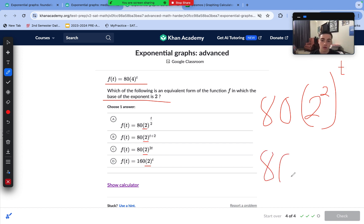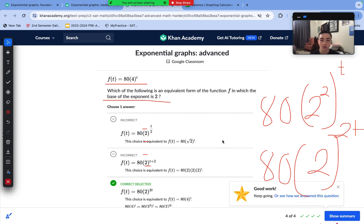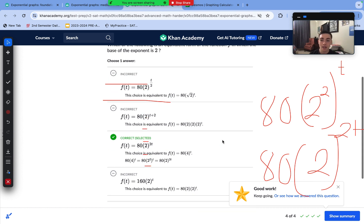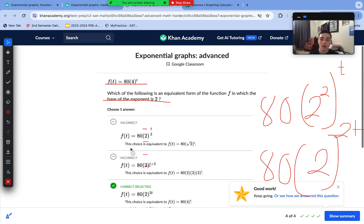This closely matches answer choice C, so it is correct. You could also double check by substituting each of these equations into Desmos, and answer choice C is the only one that would graph the same as our function here.